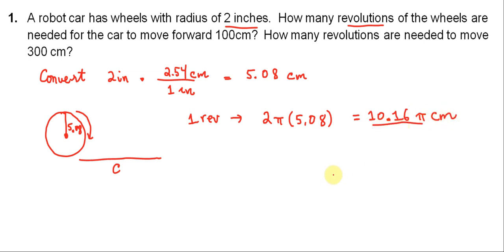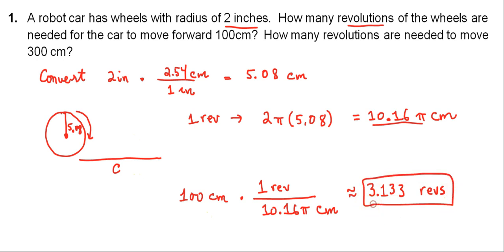So 10.16π is how far it would travel in one revolution. And now we want to figure out how many revolutions are necessary to go 100 centimeters. Well, this isn't too difficult to find out. 100 centimeters multiplied by our conversion ratio of one revolution per 10.16π centimeters. So working all of this out, we come up with an answer that is approximately 3.133 revolutions. So we want the wheel to, we want the whole car to move forward 100 centimeters. This is how many revolutions it would take, a little bit more than three.